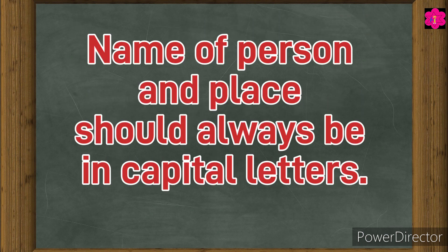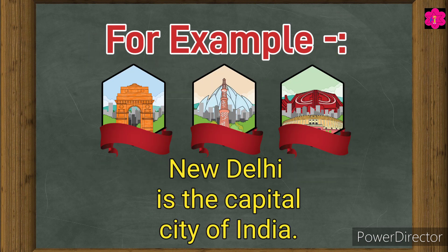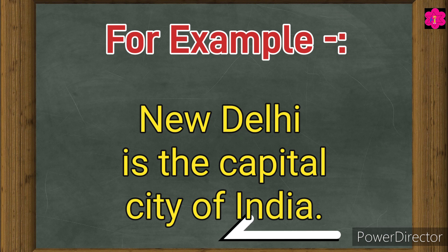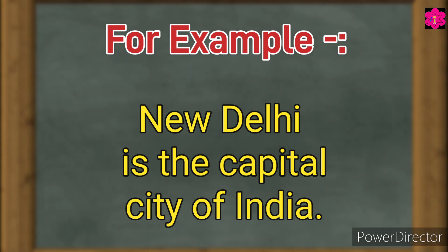Names of a person and place should always be in capital letters. For example, New Delhi is the capital city of India. Here New Delhi and India are in capital letters because they are names of a place.